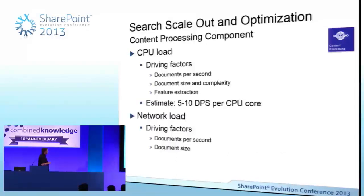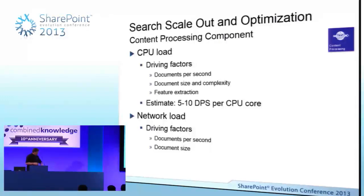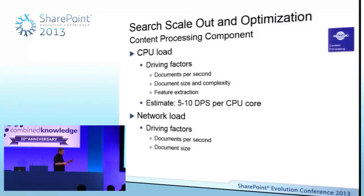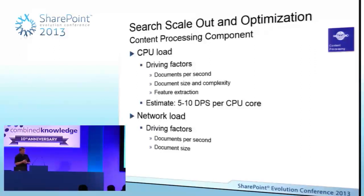Content processing: now we've done our crawl, gathered our documents, we send that content to the content processor to actually process. Driving factors here again are docs per second and the size and complexity of those documents. In 2013, we have format handlers responsible for what iFilters used to do. We still have iFilters in the product as well — we've replaced a lot of them with format handlers. This is the component that takes that document, cuts it into pieces, does the word breaking, does the linguistics processing. It's doing a lot of heavy lifting. And it's receiving information from the crawl component while also pushing data down into the index component.